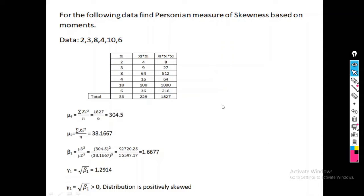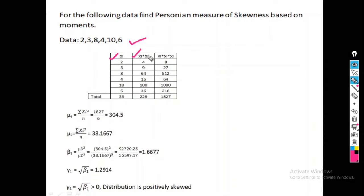Here is an example of Pearson's measure of skewness. The data is: 2, 3, 8, 4, 10, and 6. We first calculate the second and third central moments. For that, we create a table with columns xi, xi squared, and xi cubed, and find the summation of all values. The sum of xi is 33, sum of xi squared is 229, and sum of xi cubed is 1827.